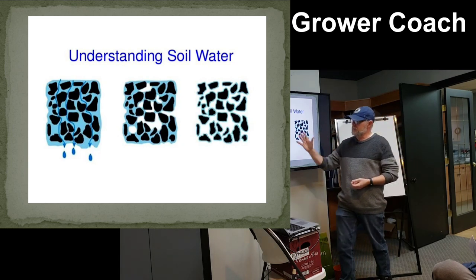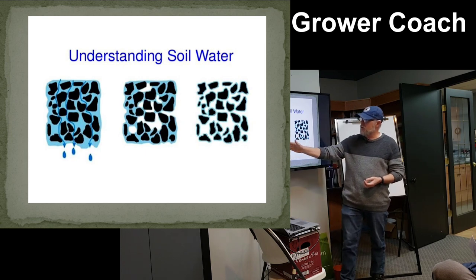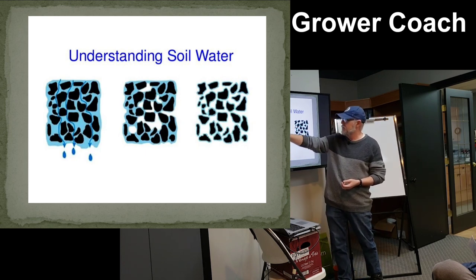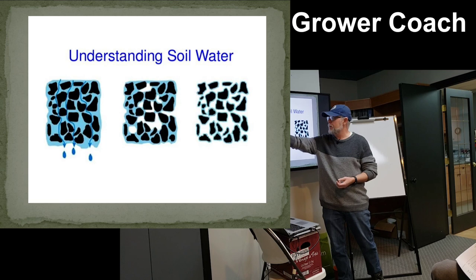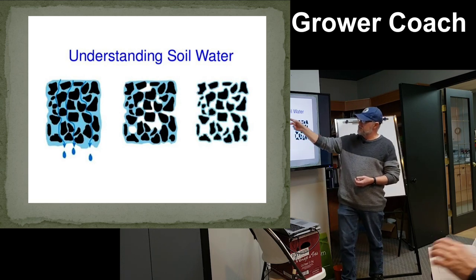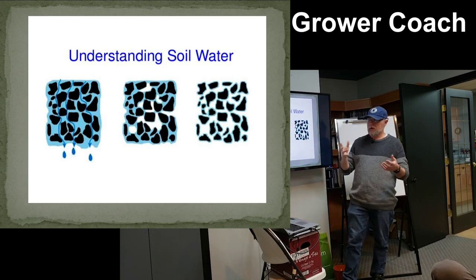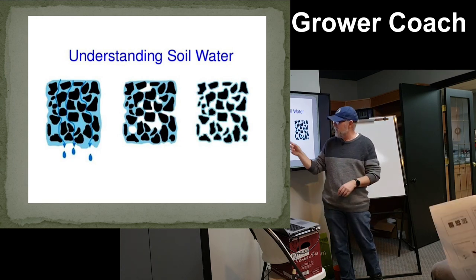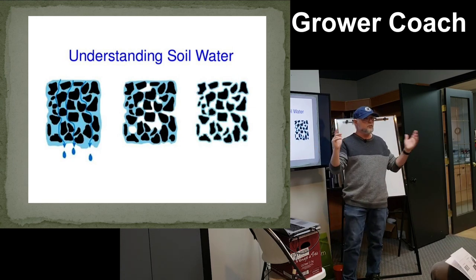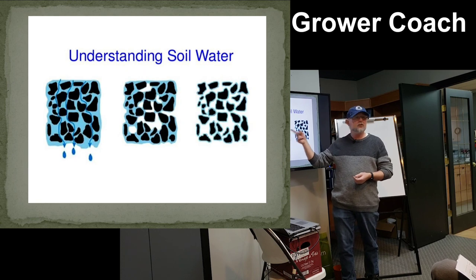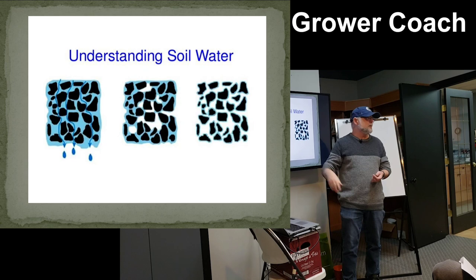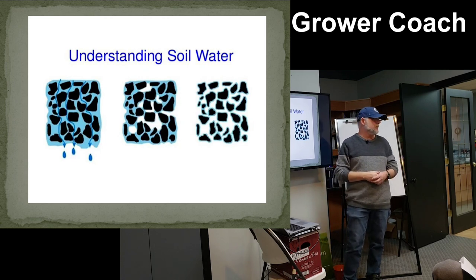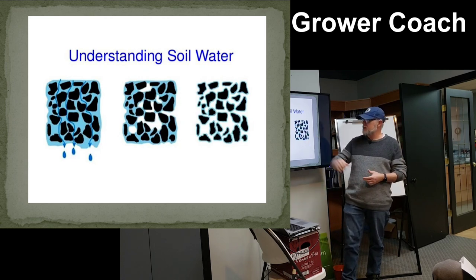When you fill soil to its field capacity, it's got all the water it can take and the excess water runs away — that's field capacity. Once that excess water drains away, you're left with a beautiful ratio: 25% water, 25% air, and the hard particles making up about 45%. You can see how it all pieces together.